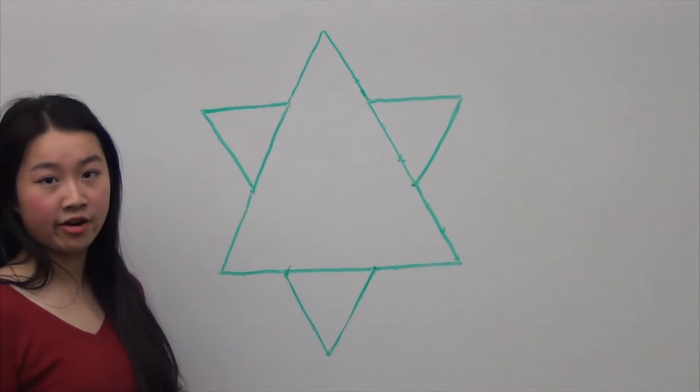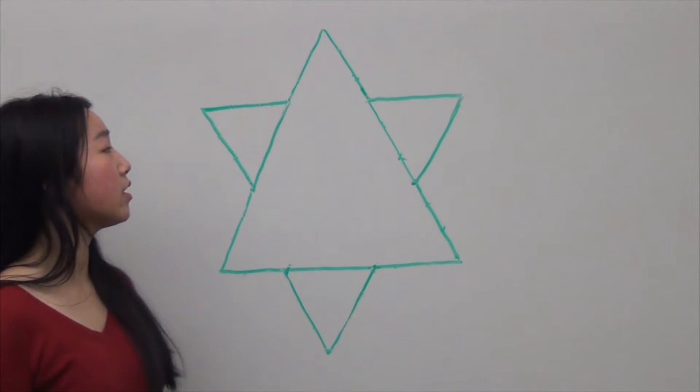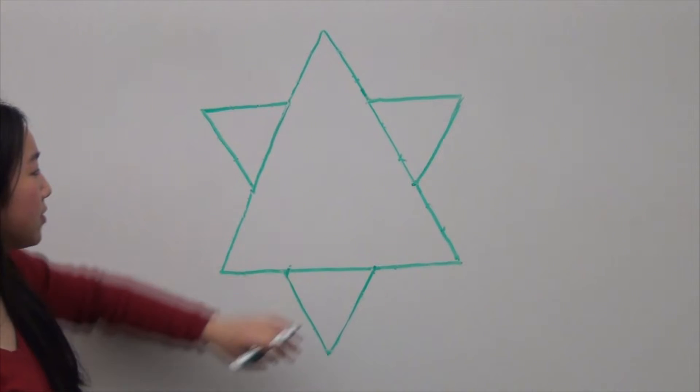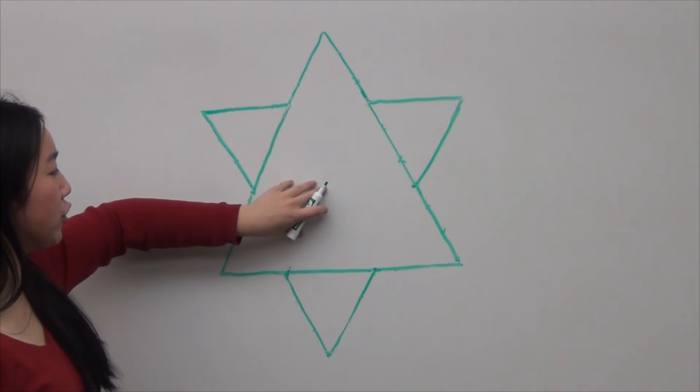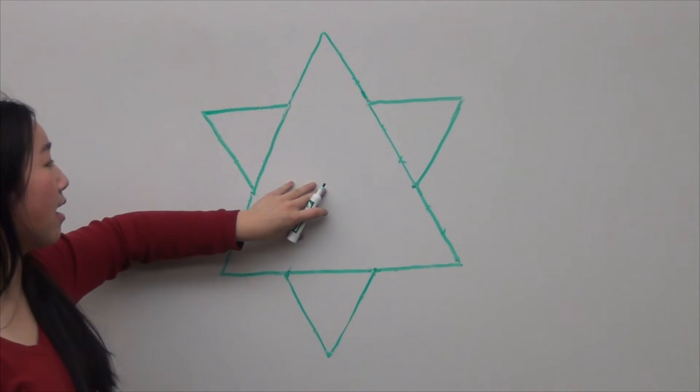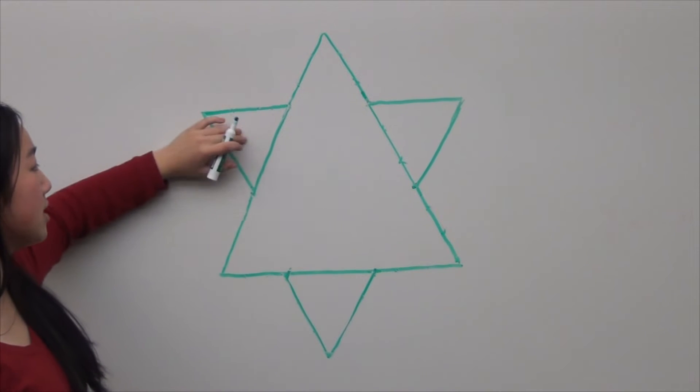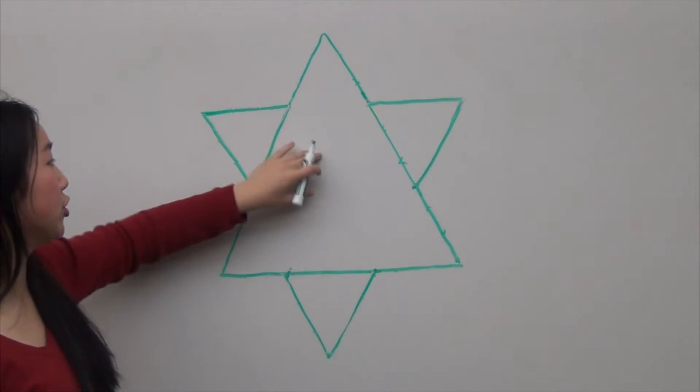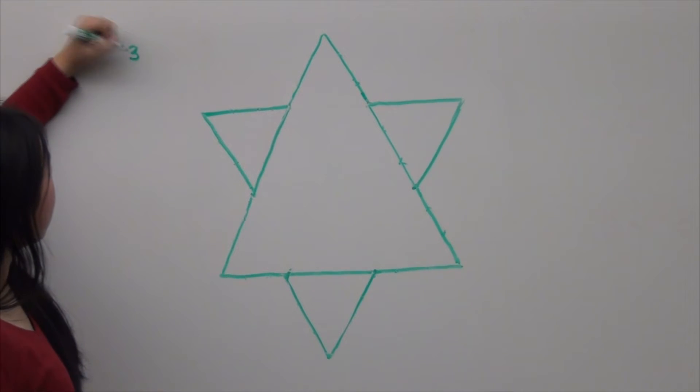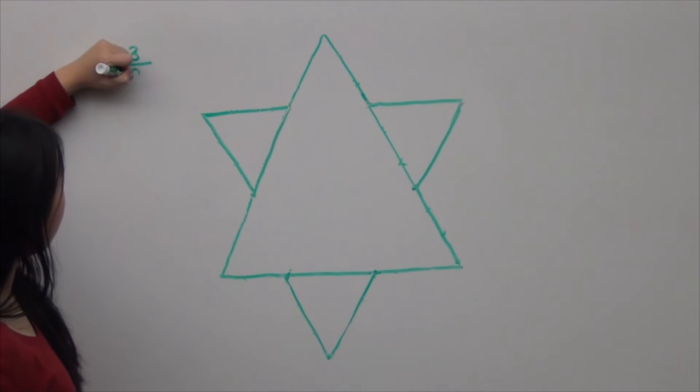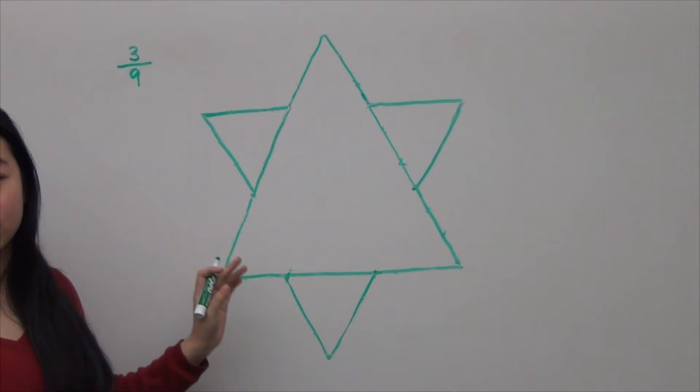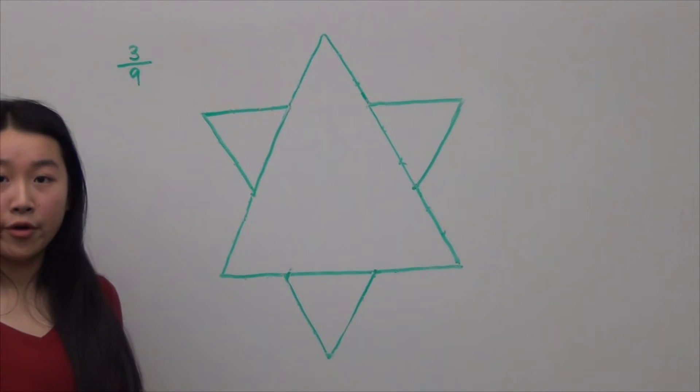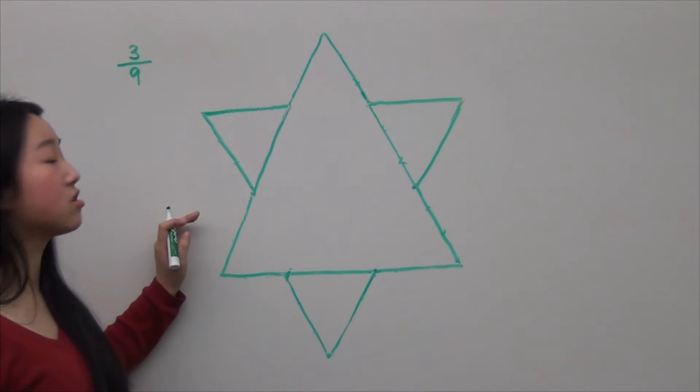Now we have to show that the area of the Koch snowflake is finite. First, notice how in this first iteration, we've added three triangles. If we divided this original equilateral triangle into nine equilateral triangles, we'll see that the triangles we added, they're each one-ninth the area of the original. So we've added three new triangles, each with one-ninth the area of the original, and the area that we've added is three-ninths.